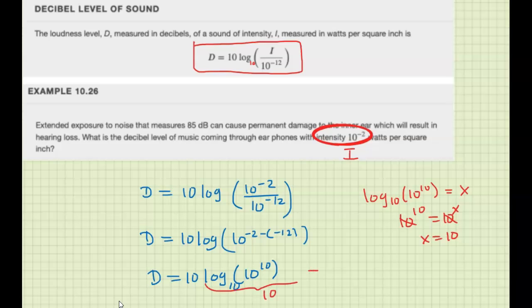whole thing simplifies to give you 10. So 10 outside times 10 from the log gives me 100 decibels.